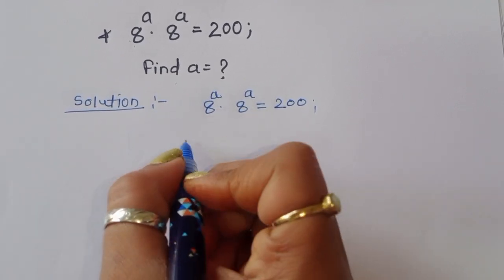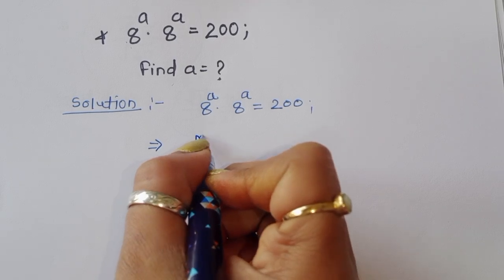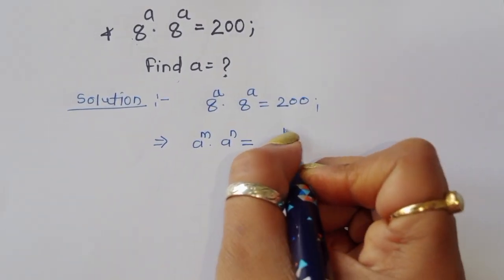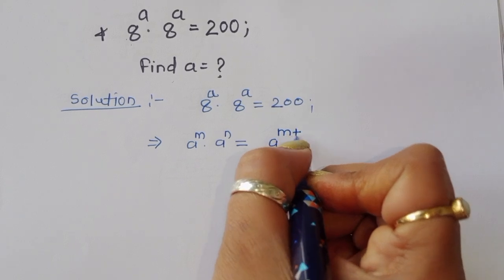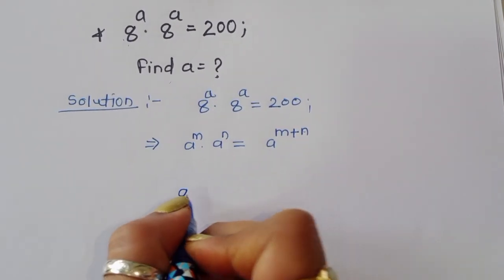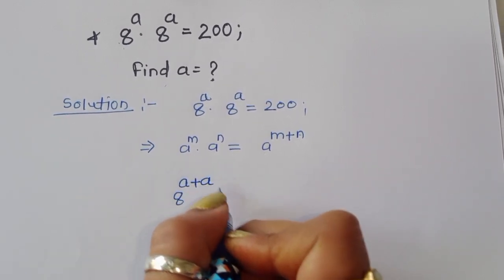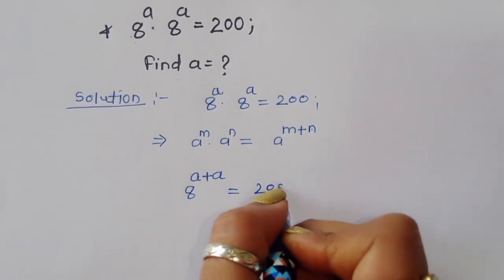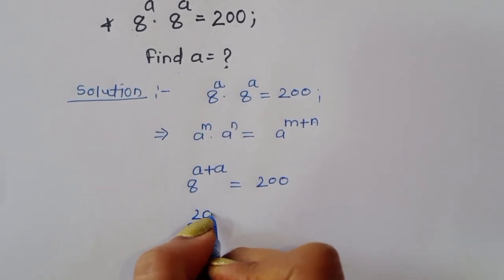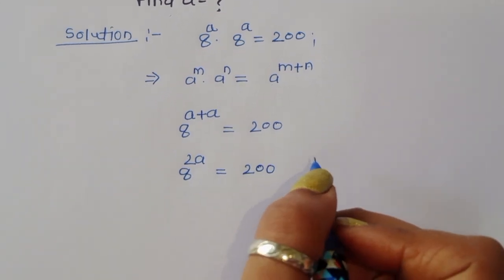We know the formula: a power m times a power n equals a power m plus n. According to this formula, we can write 8 power a plus a, which equals 8 power 2a, and that is equal to 200.